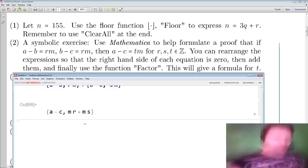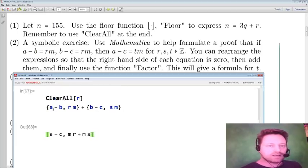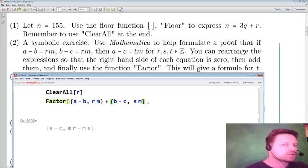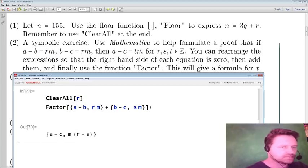And a webcam - I need a better webcam for this. Okay, so now that I have that, I want to factorize the right hand side. So I'll just write Factor, it's an uppercase F and square brackets for the function to factor. Factorize now. So there we have it. What this is telling me is that a minus c is m